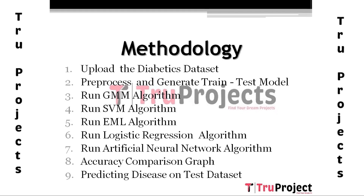In ELM, the weights between hidden nodes and outputs are learned in a single step, which amounts to learning a linear model. According to its creators, this model produces good generalization performance and learns thousands of times faster than networks trained using back propagation.